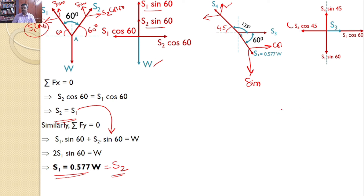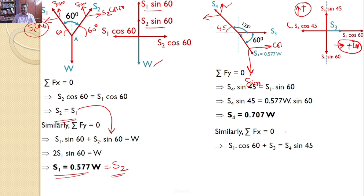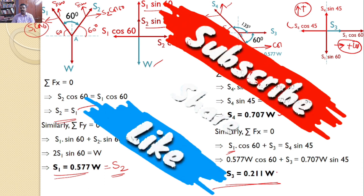Applying equilibrium equations (sigma Fx = 0, sigma Fy = 0). For sigma Fy = 0, considering upward positive: S4 sin 45 = S1 sin 60. Substituting S1 = 0.577W gives S4 = 0.707W. Then for sigma Fx = 0, taking right as positive: S1 cos 60 + S3 = S4 cos 45. Substituting S1 = 0.577W and S4 = 0.707W and solving gives S3 = 0.211W, which is the answer for this problem.